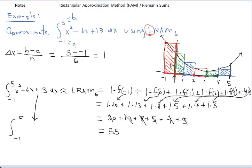So using left rectangles to approximate the region between a curve and the x-axis is done like this, using a left RAM.